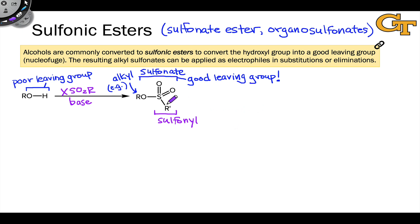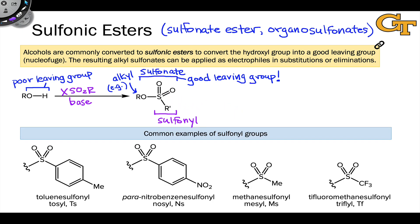Now different types of sulfonate esters can differ in the nature of this R group, which was in the original alcohol, but also can differ in the nature of this R' group that's linked to sulfur. The most common R' groups that you see are surveyed here below.